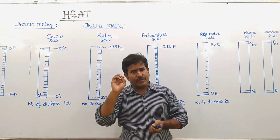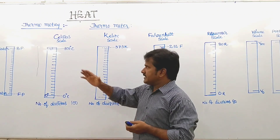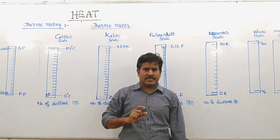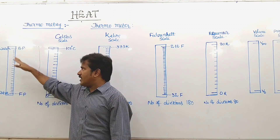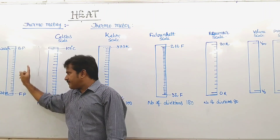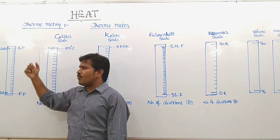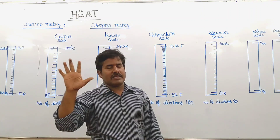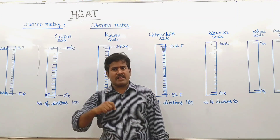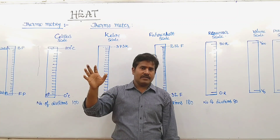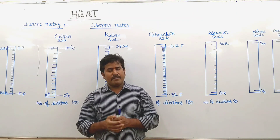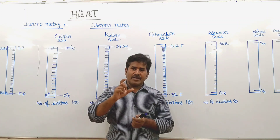Temperature is measured using a thermometer. The thermometer scale is made using the freezing point and boiling point of water. Mercury is used in thermometers because it has very low specific heat, is easily expandable, and does not vaporize easily.